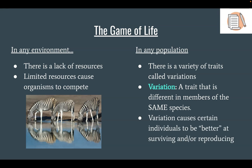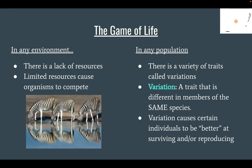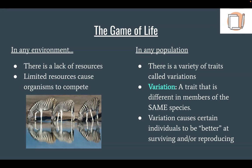These slight differences, these slight variations, cause certain individuals to be better at surviving or reproducing. One of those zebra is going to be slightly better at surviving, or it's slightly more attractive and will be more likely to reproduce.